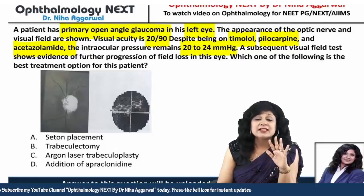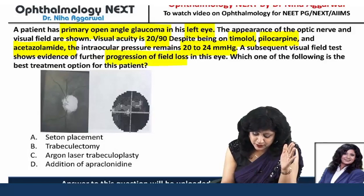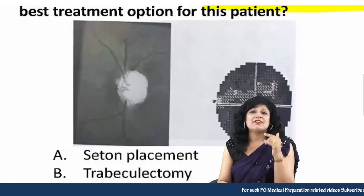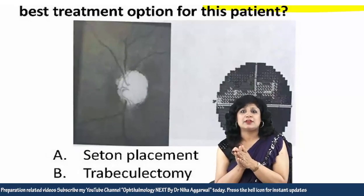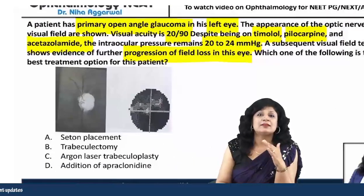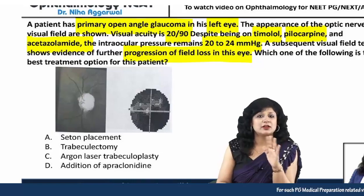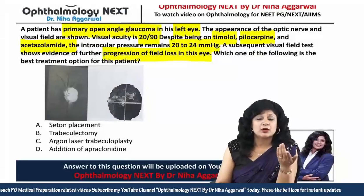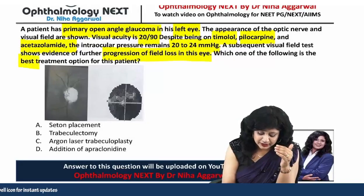Subsequent visual field tests show evidence of progression of field loss. Looking at the optic disc changes, we have nearly total optic disc atrophy. Visual field changes are also progressing, clearly indicating this patient is not controlled on drugs — beta blockers, miotics, and carbonic anhydrase inhibitors are all being given. Which is the best treatment option?